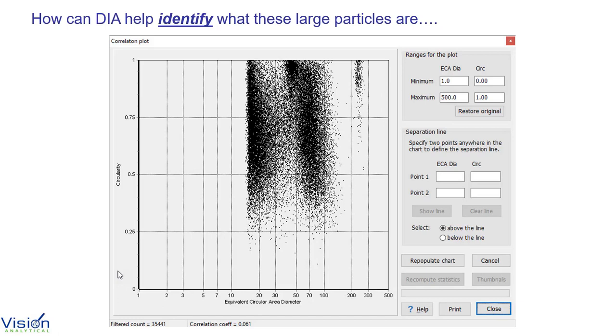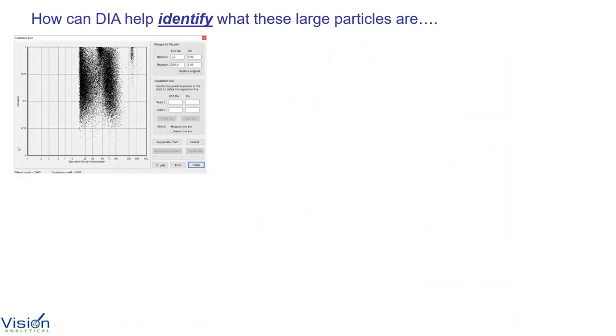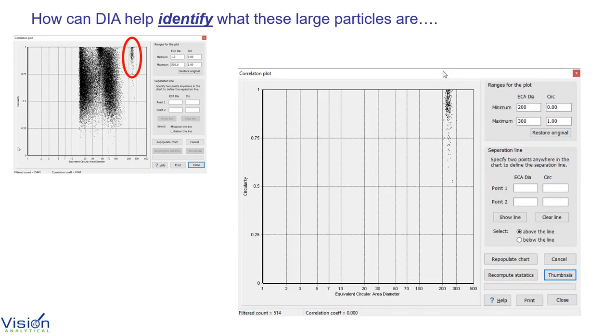The correlation plot is a tool that enables the easy identification of rare event particles. In the sample shown here, we can correlate the many thousands of particles measured in minutes. And as shown we can easily identify the presence of rare events. This tool makes them easy to find. In this case, out of 35,000 particles, 514 or just 1.5% were identified as rare event particles or these agglomerates. However, just knowing they are there is not enough to take action to correct the process.